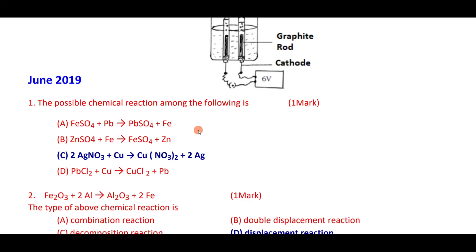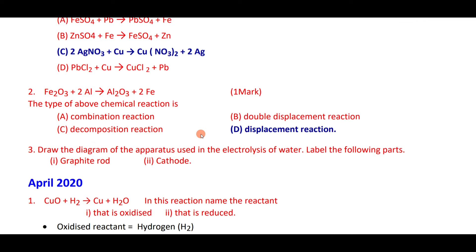This reaction takes place because copper is more reactive than silver — it displaces silver. Hence this reaction is possible. Next, Fe₂O₃ plus 2Al gives Al₂O₃ plus 2Fe. This is an example for displacement reaction because aluminum is more reactive than iron, so aluminum displaces iron.